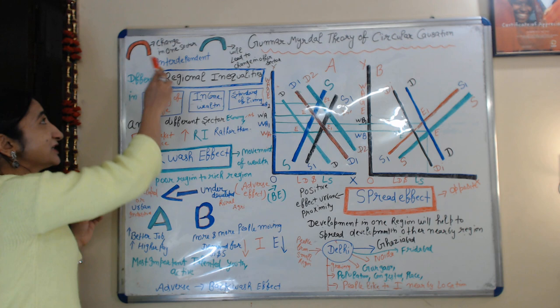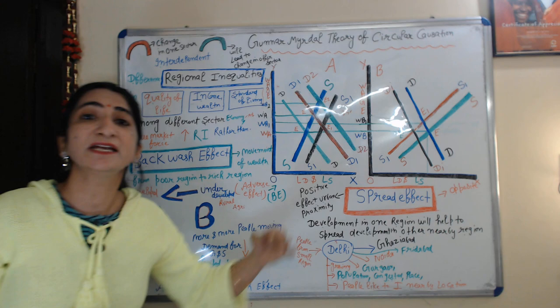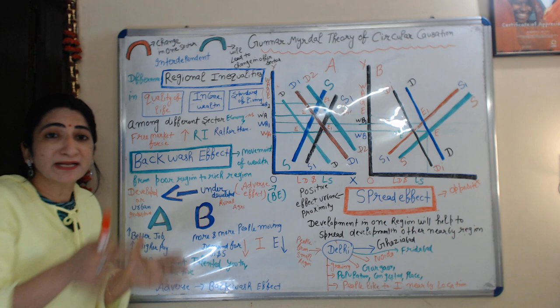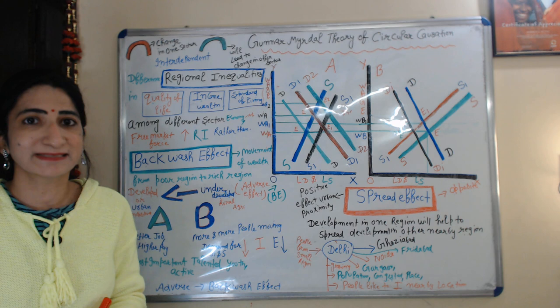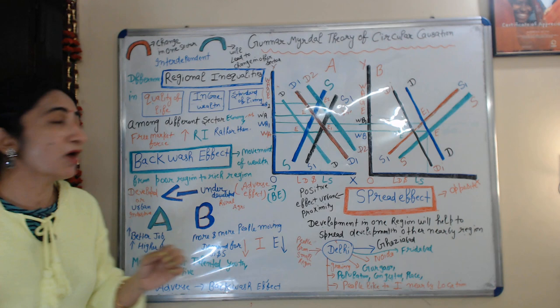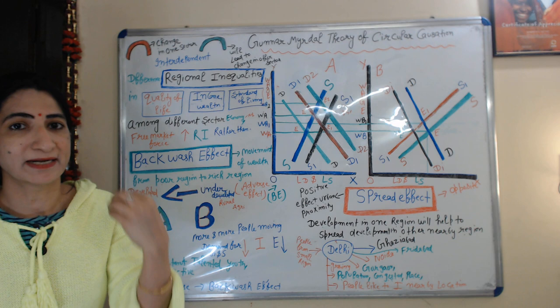According to this theory, a change in one sector will lead to change in other sectors — meaning all sectors of the economy are interdependent to each other. In terms of economic development, this theory basically talks about regional inequalities.